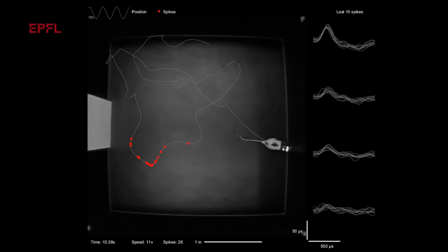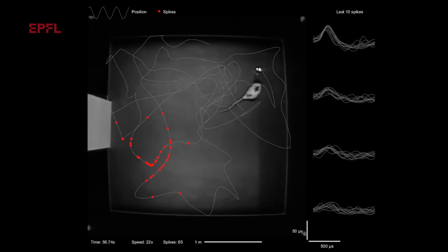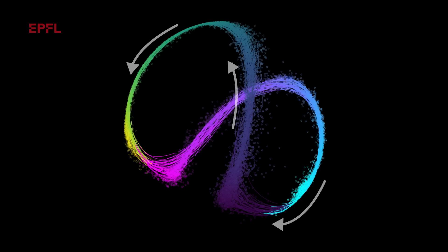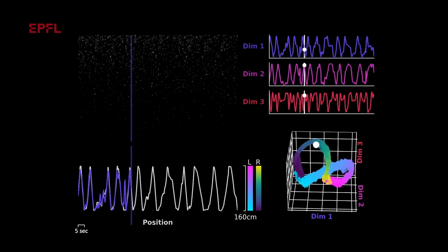Here we have an example of a rat moving up and down a linear track while we record neural activity from the hippocampus. In this example, we shape the embedding space with the position information we have available and find an embedding space that is highly accurate at decoding the position of the rat.